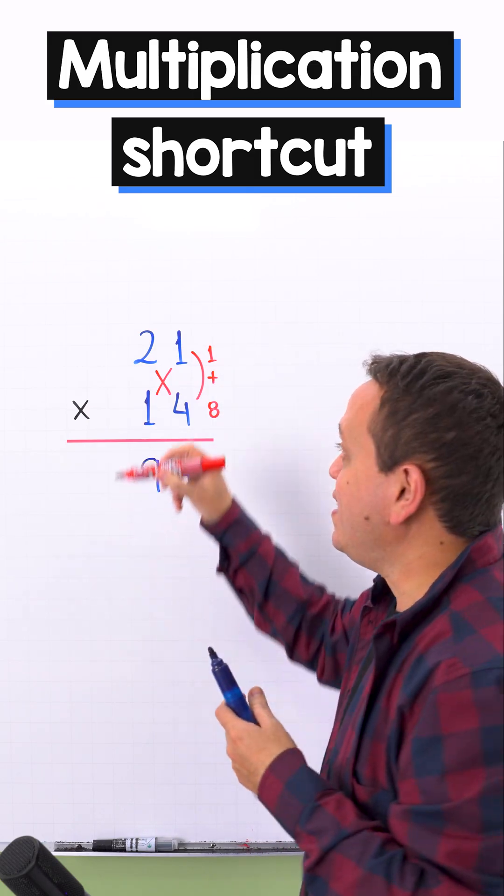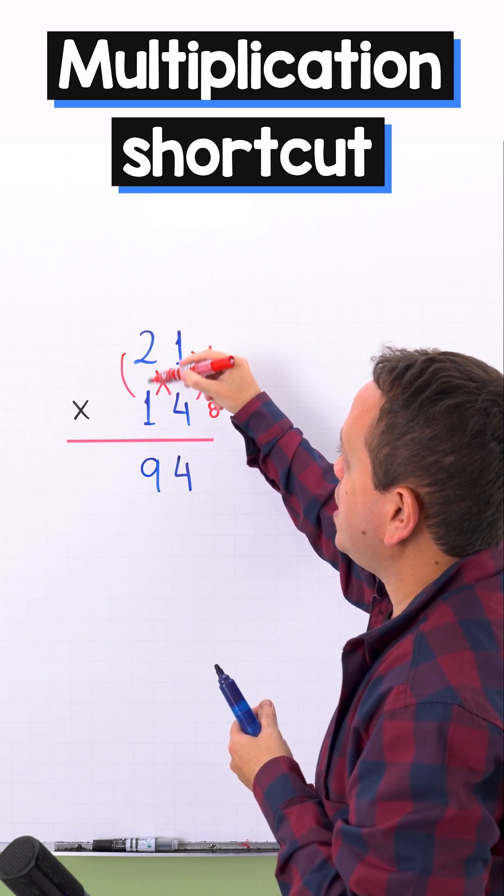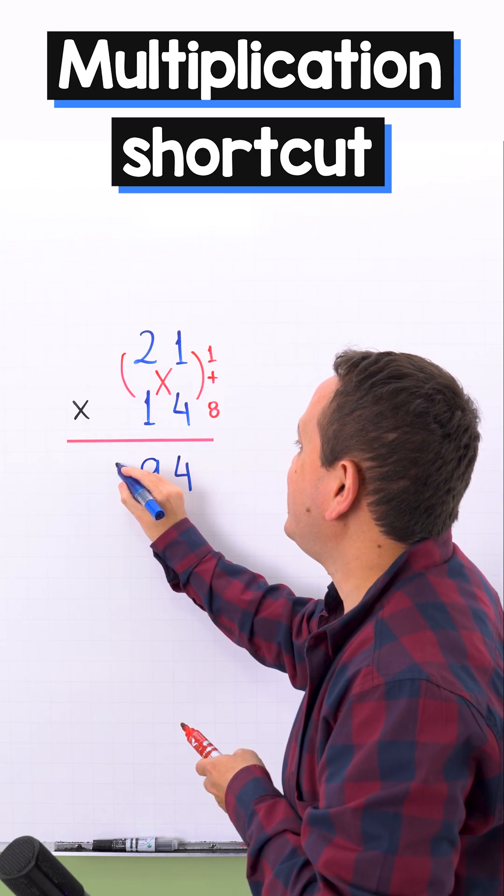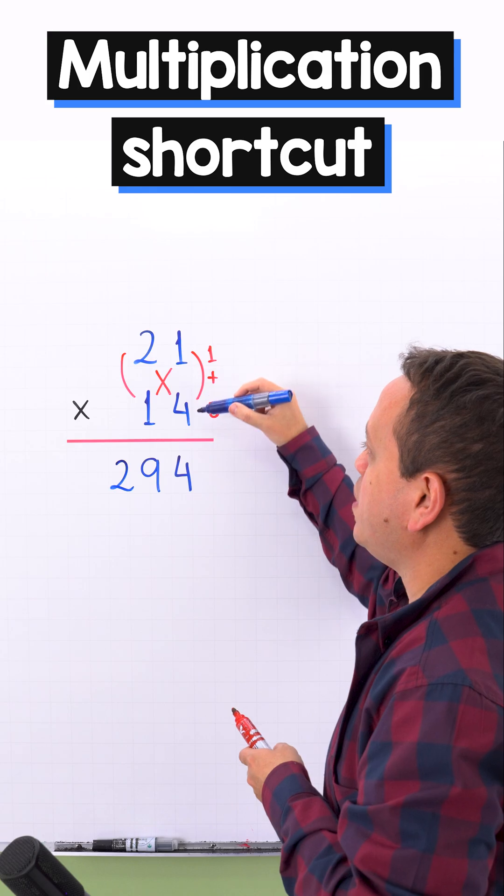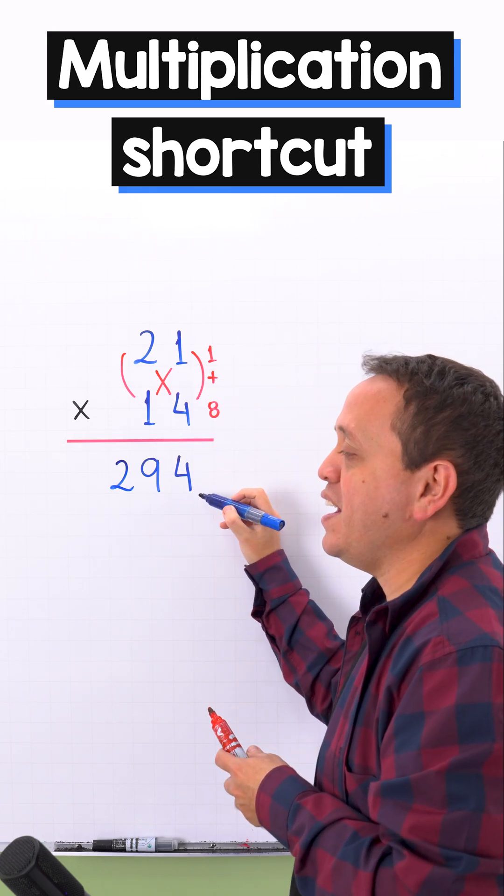Finally we just need to multiply the digits on the left side. And 2 times 1, 2 times 1 equals 2. That's it. 21 times 14 give us 294.